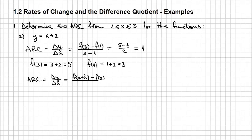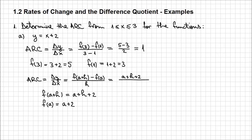The difference quotient is f of a plus h minus f of a over h. Let's see what f of a plus h is. Instead of x, I'm going to write a plus h, so it's going to be a plus h plus 2, and f of a is a plus 2. Substituting: a plus h plus 2 minus (a plus 2), all over h. I can reduce: a minus a disappears, plus 2 minus 2 is 0, so I'm left with h over h, which is 1.